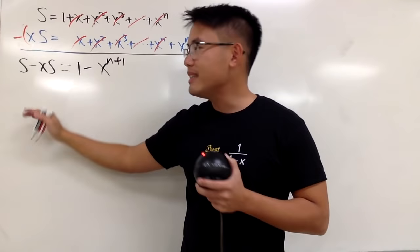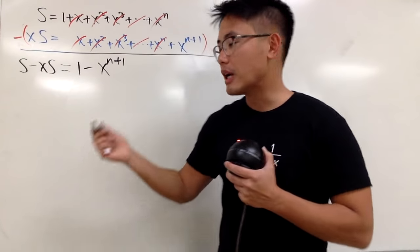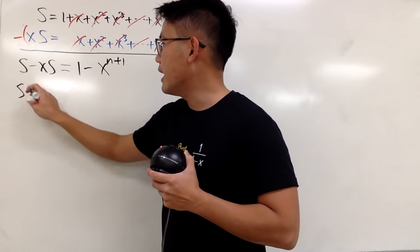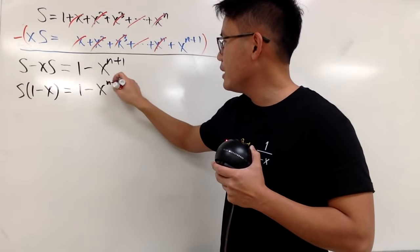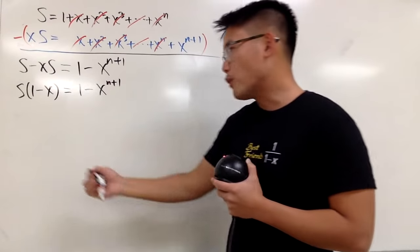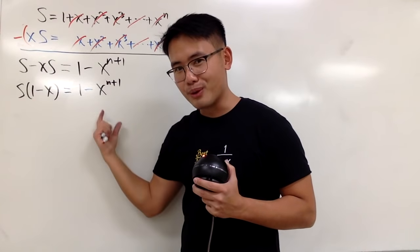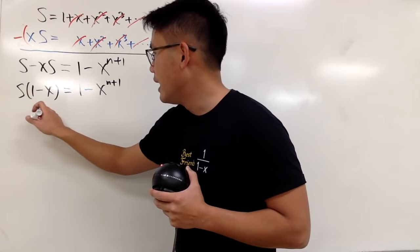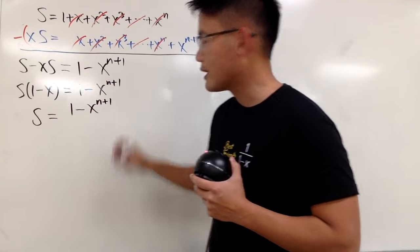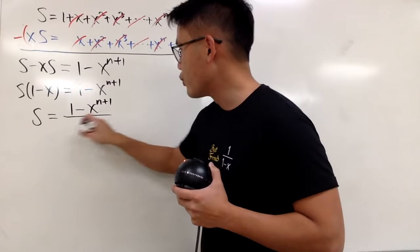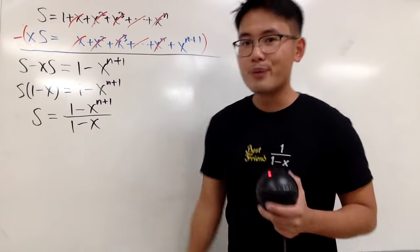Now, on the left-hand side, both terms have S, so I can factor the S out. So I get S times 1 minus x is equal to 1 minus x to the n plus 1 power. Of course, we can now just divide this on both sides. You see that S is equal to 1 minus x to the n plus 1 power over that right here. So we're pretty much done.